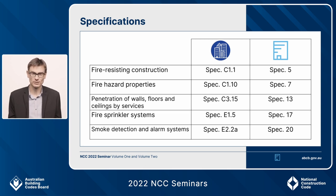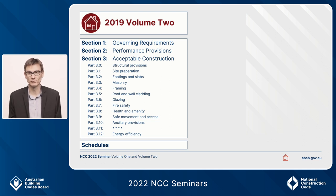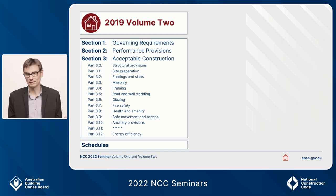That covers the changes in the referencing system and structure for Volume 1. Now for Volume 2. Volume 2 has had a big makeover. Today, Volume 2 starts with Section 1, the governing requirements — more or less the same as Section A in Volume 1. Then Section 2 contains the performance provisions — performance requirements and verification methods. Section 3 is mostly the acceptable construction practice, with parts from 3.0 structural provisions down to 3.12 energy efficiency. After that come the schedules, including definitions and state and territory variations.